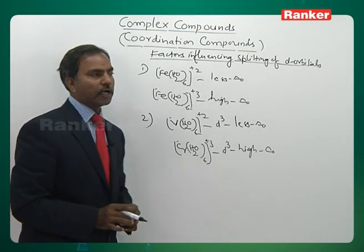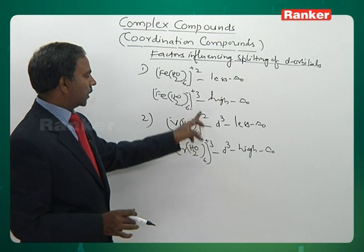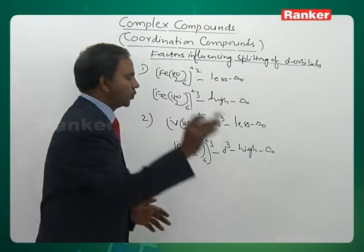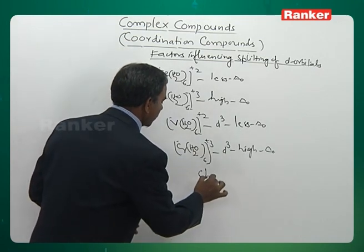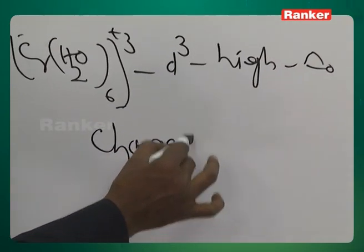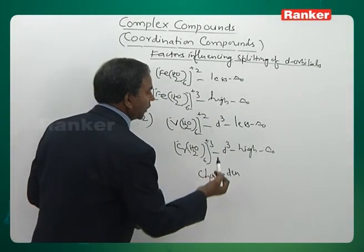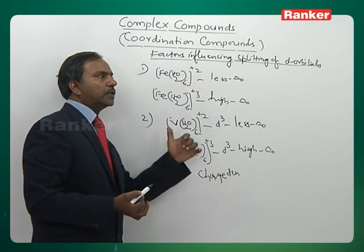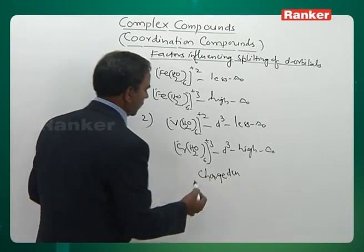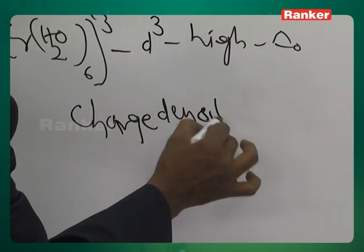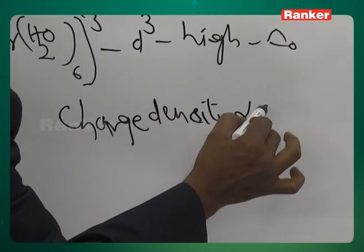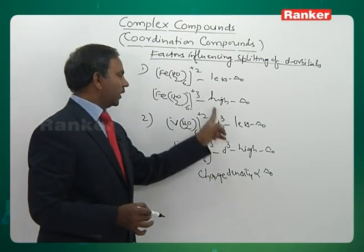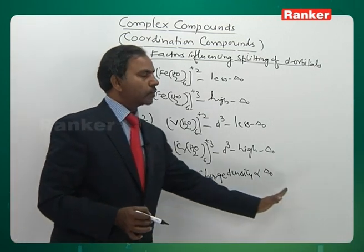From these two factors, what we can understand is: greater the charge density, greater the splitting. Therefore, charge density is directly proportional to splitting of d orbitals. Charge density here refers to the positive charge of the metal ion, or oxidation number.